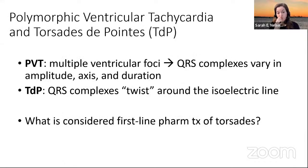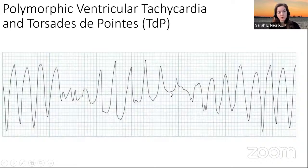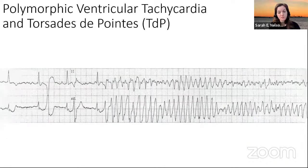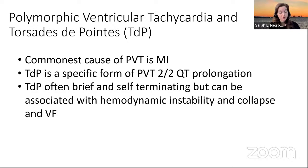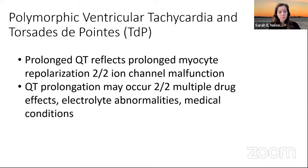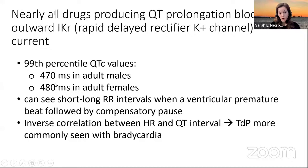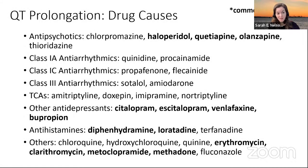Torsades — recall this twisting around the points. This is where we get concerned about the QT interval. We can see the twisting pattern on this EKG or rhythm strip. The commonest cause of polymorphic VTach/torsades could be MI, but also QT prolongation. We typically think of a max QTc value of around 500 milliseconds — the 'c' meaning corrected for heart rate. When we start to exceed 500, we get concerned that we might be overdoing it with one of many QT-prolonging medications these patients receive.